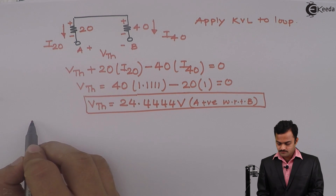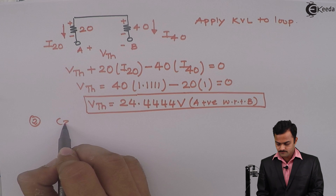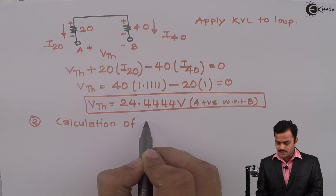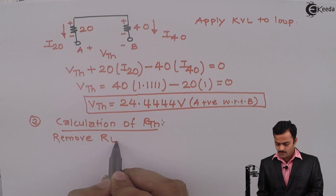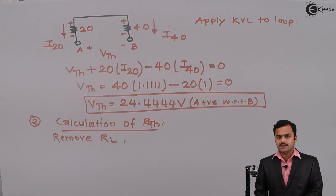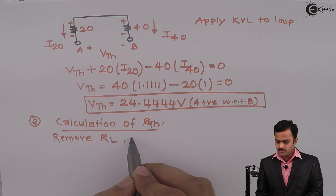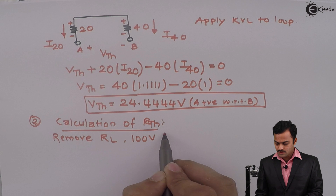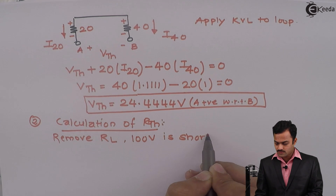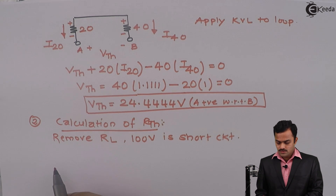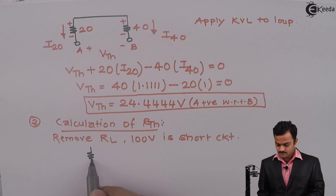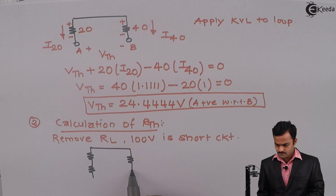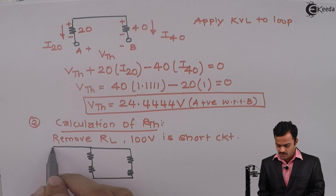Step number 1 is over. Let's go to the second step: calculation of RTH. For this, we need to remove RL. Whatever sources are present, we need to replace them with their internal resistances. Here we have only one voltage source of 100 volts, so that voltage source is short-circuited, because it is a voltage source and its internal resistance is 0. If I do the modification, I will get a new circuit.